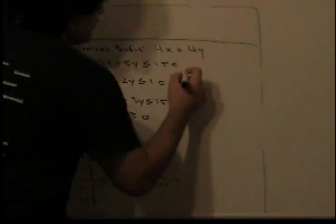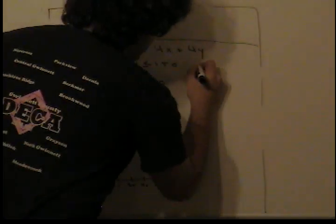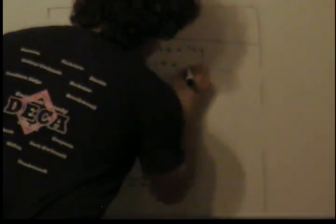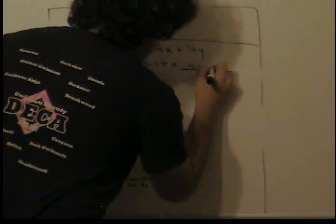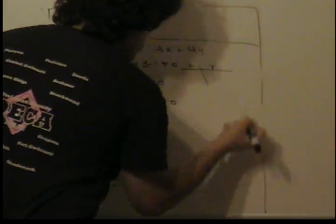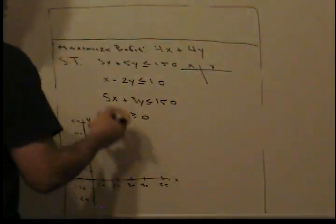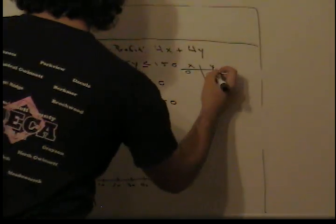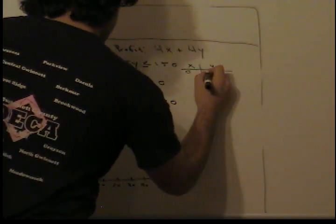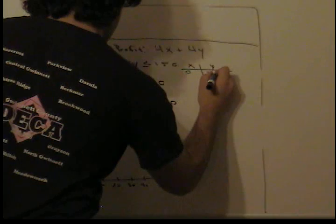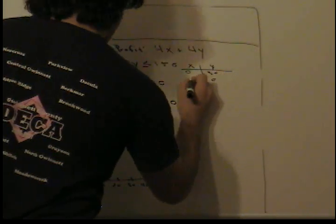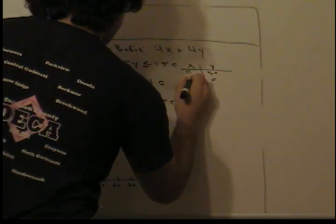For the first constraint, when x is 0, y is 30, and when y is 0, x is 50.